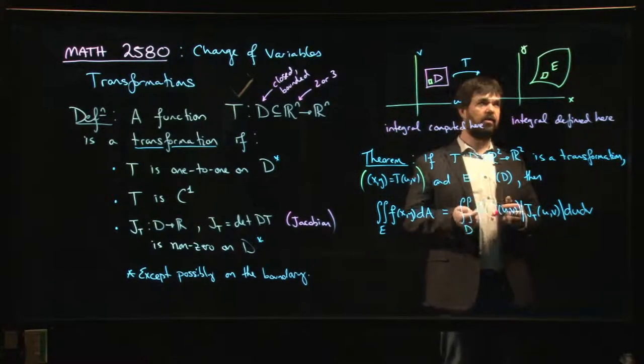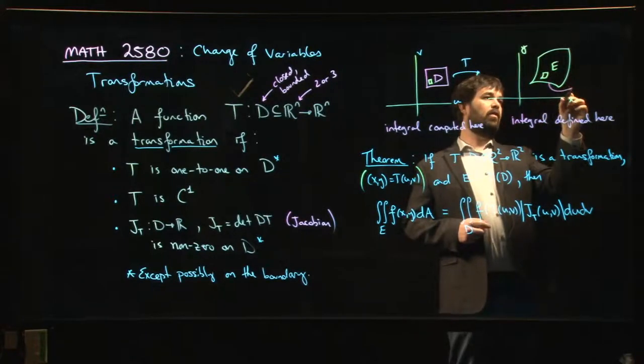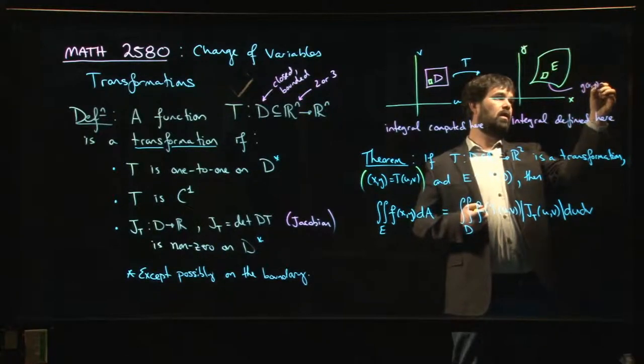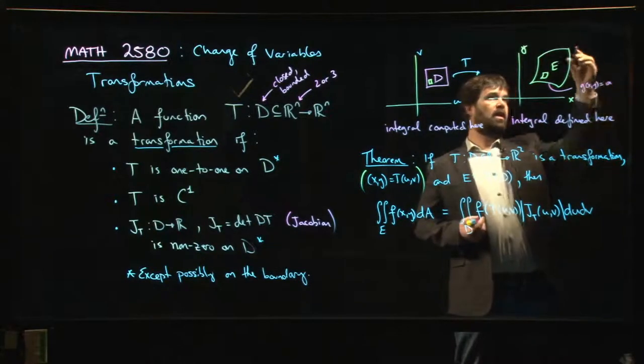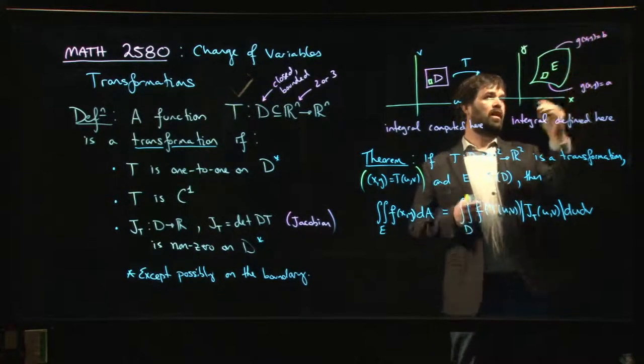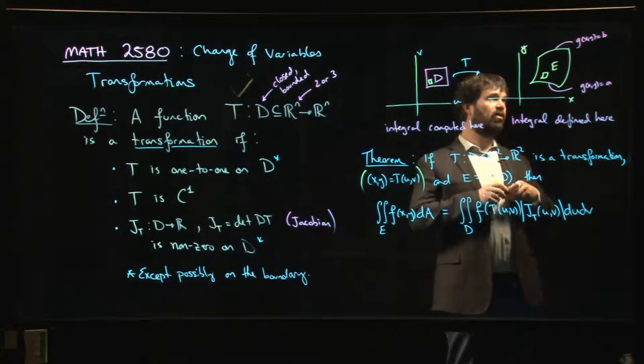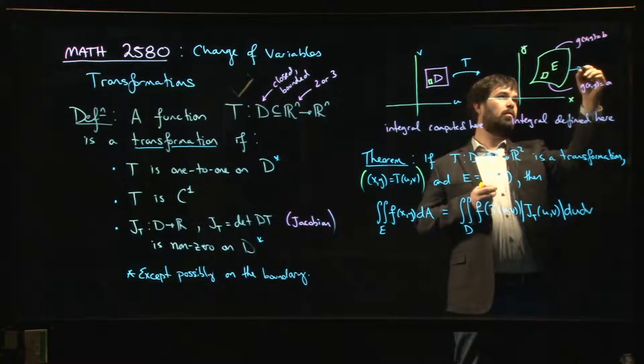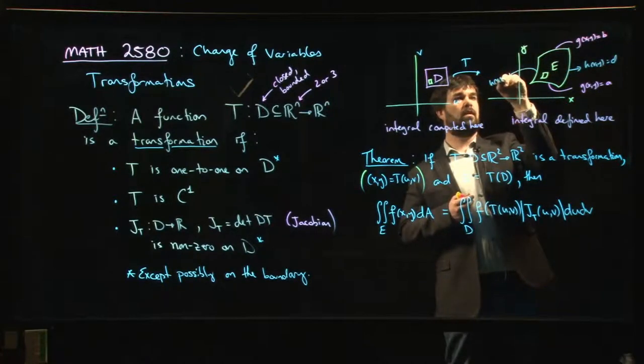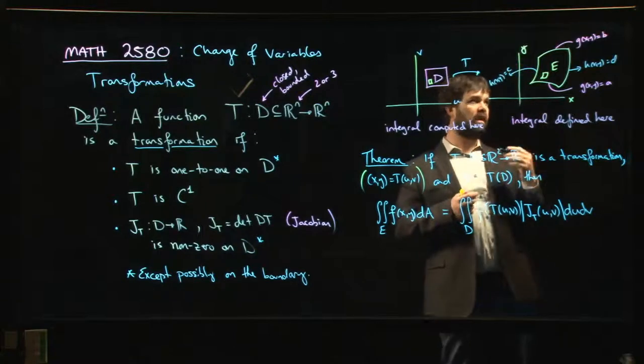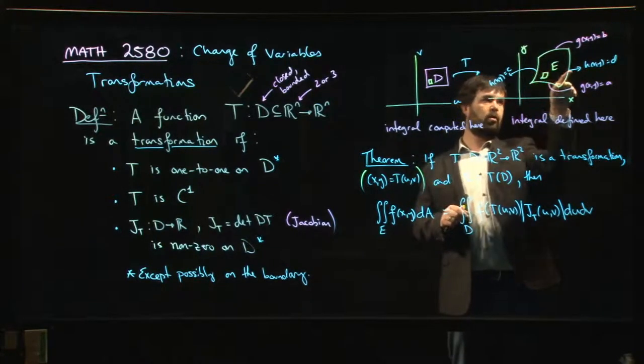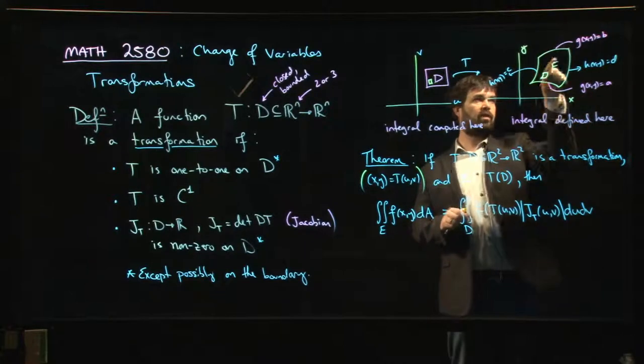So often what you find is that you might find that these boundary pieces here might be given by, say, maybe like g of xy is equal to like a. And this is another curve in the same family. So these both belong to some family of level curves. And the other sides, they happen to belong to some other family. So this might be something like h of xy equals maybe d. And this side is h of xy is equal to, say, c. So if you can look at your region and you realize, hey, this, you know, I have this function of x and y, which varies between c and d. I have this other function of x and y, which varies between a and b.